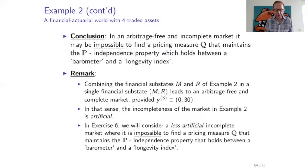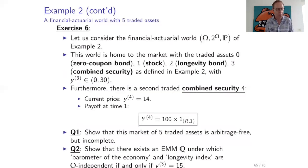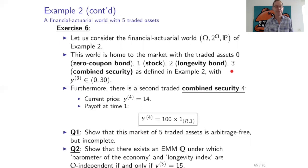In that sense, the incompleteness in this example is a little bit artificial. So in exercise six we will consider a less artificial incomplete market where it is also impossible to find a pricing measure Q that maintains the P-independence property between the barometer and the longevity index. We consider the financial actuarial world of example two with the same traded assets: asset 0 the zero coupon bond, asset 1 the stock, asset 2 the longevity bond, and asset 3 the combined security. We assume the price of the combined security is in (0, 30), guaranteeing no arbitrage.